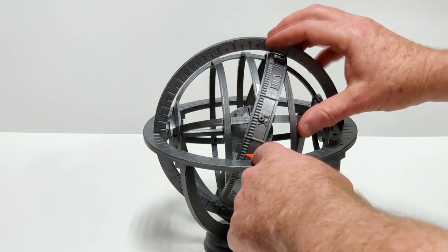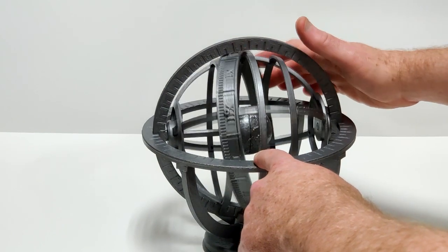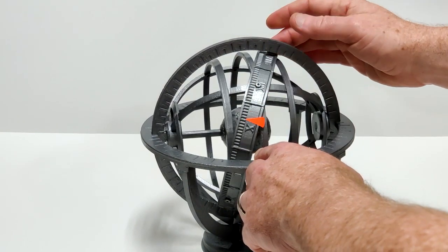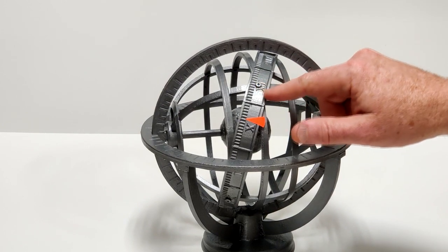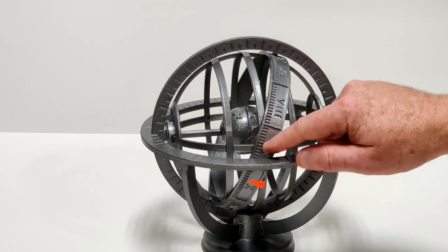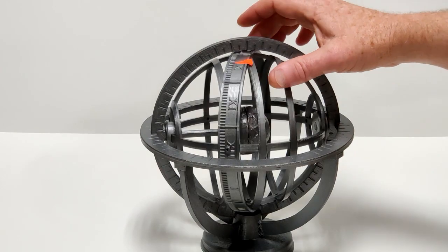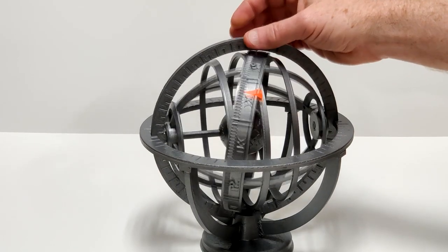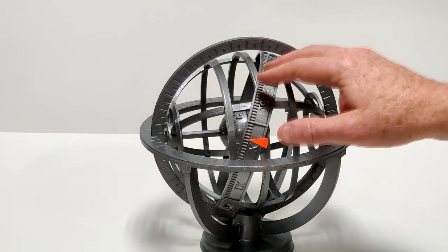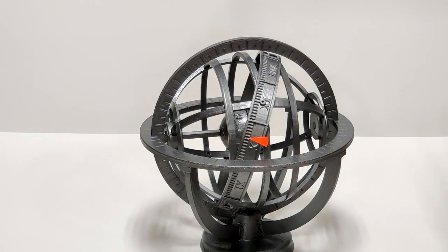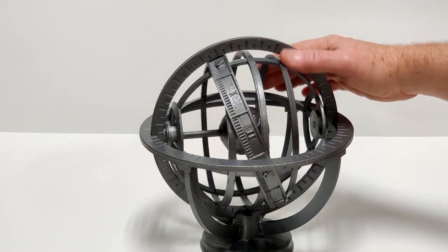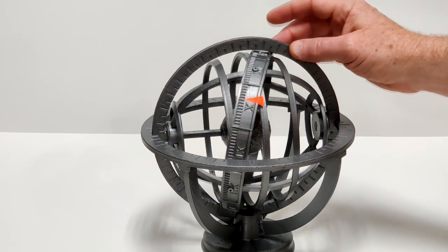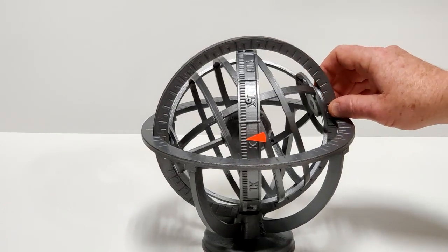And on the autumnal and vernal equinoxes the sun traces a path directly overhead, and then on the summer and winter solstices it's actually 23 degrees north or 23 degrees south, so the day's a little bit shorter on those days than it is on the equinoxes curiously.